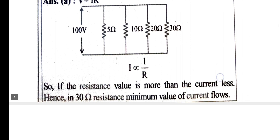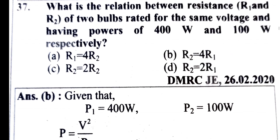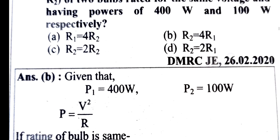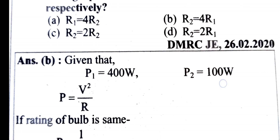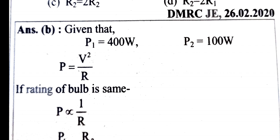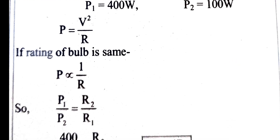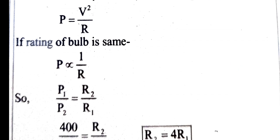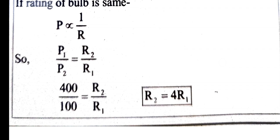What is the relation between R1 and R2 for bulbs rated for the same voltage having power of 400 watt and 100 watt respectively? Power is V² by R, so R equals V² by P. Power is proportional to 1 by R, so P1 by P2 equals R2 by R1. Therefore R2 by R1 equals 400 by 100, which is 4. R2 is equal to 4 times R1. Option B.